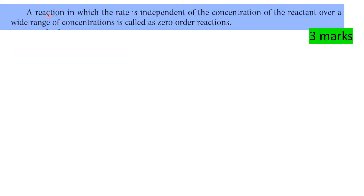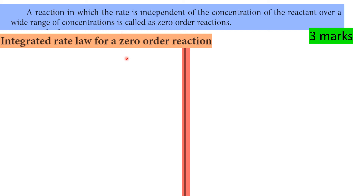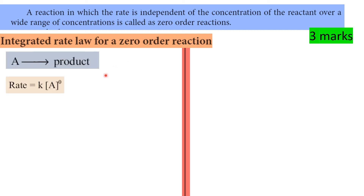What is a zero order reaction? A reaction in which the rate is independent of the concentration of the reactant over a wide range of concentrations is called a zero order reaction. For a zero order reaction, rate equals k into A to the power 0, which equals k.